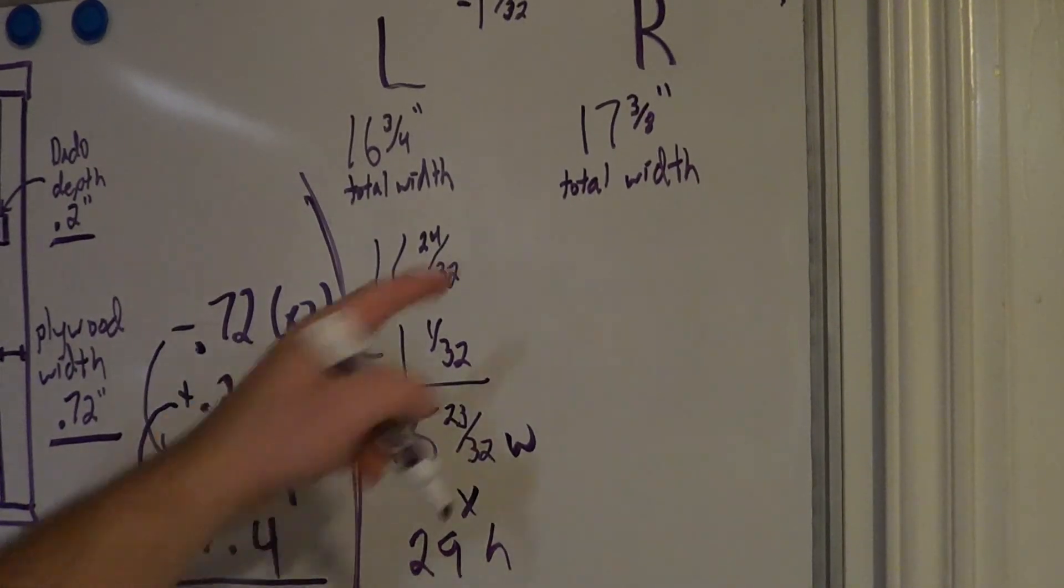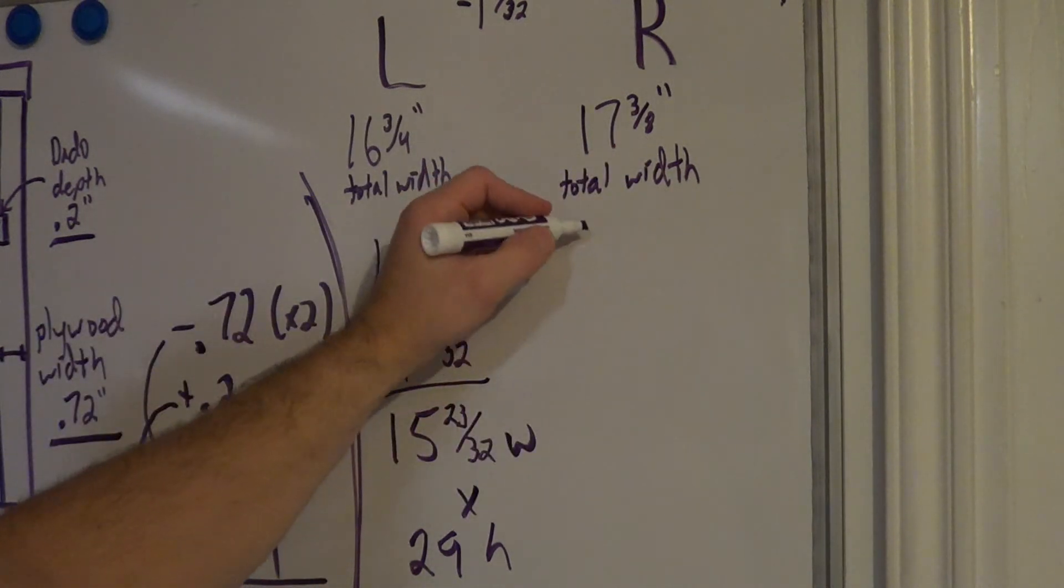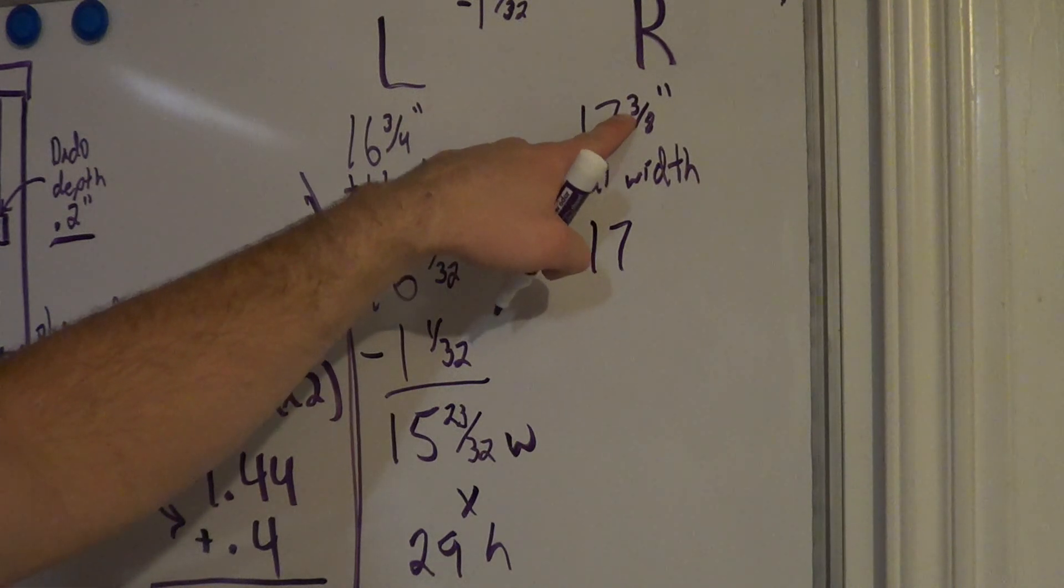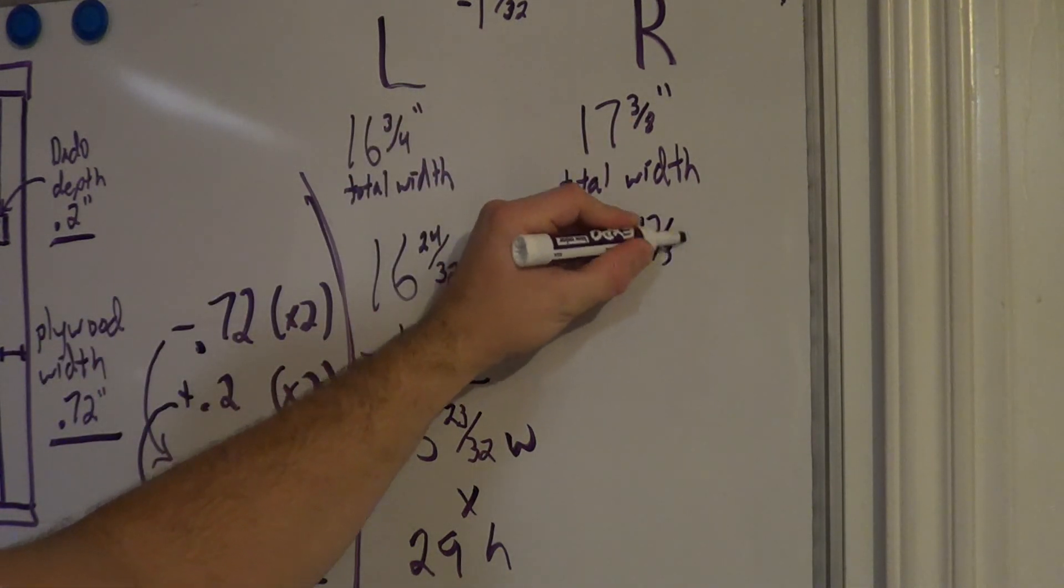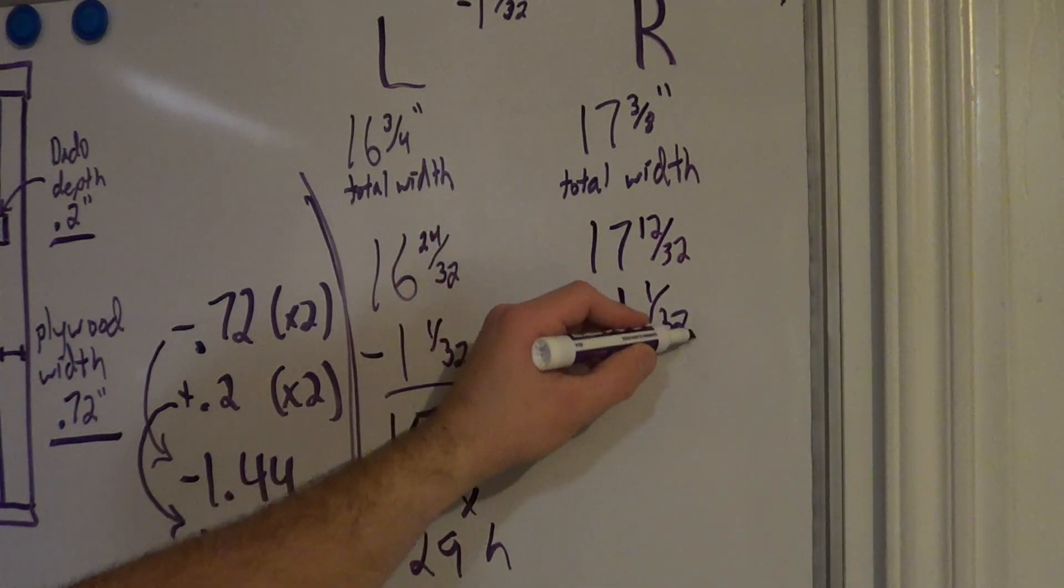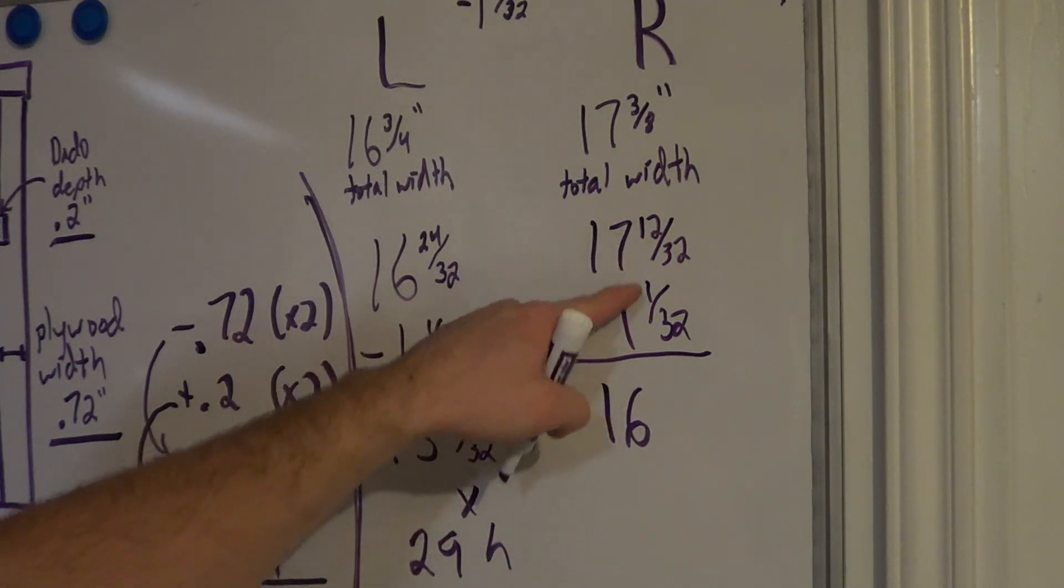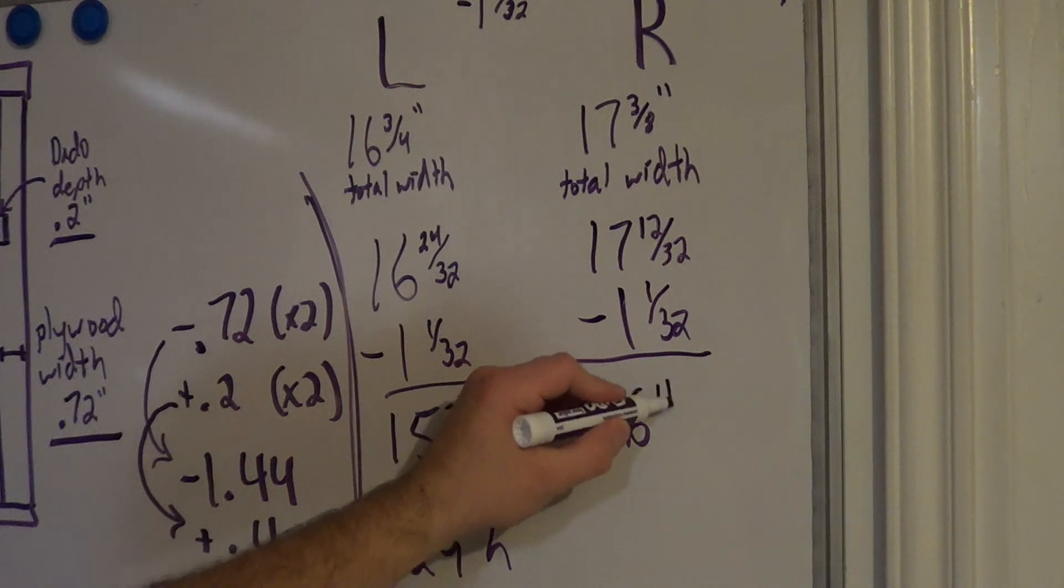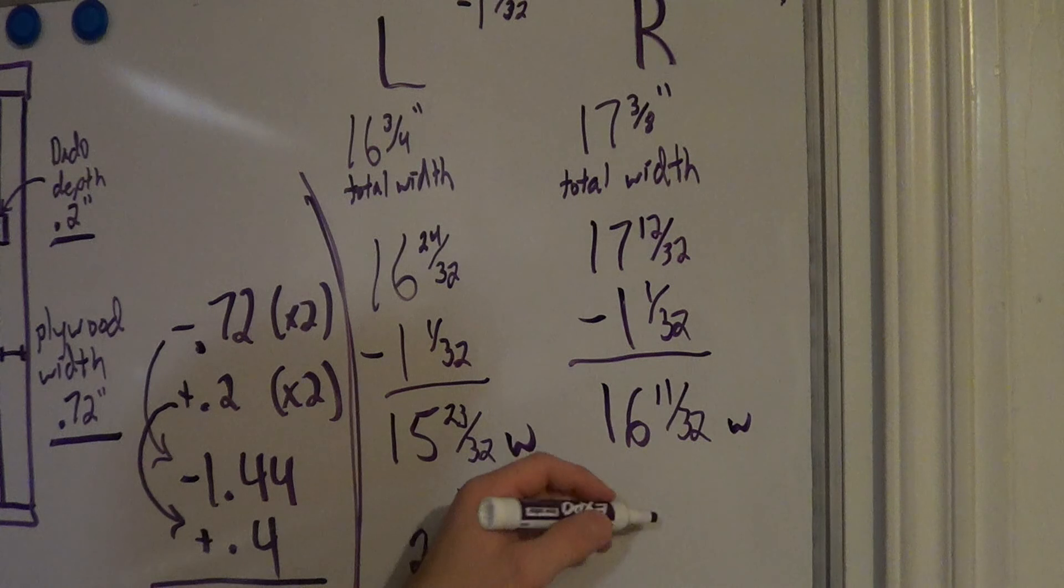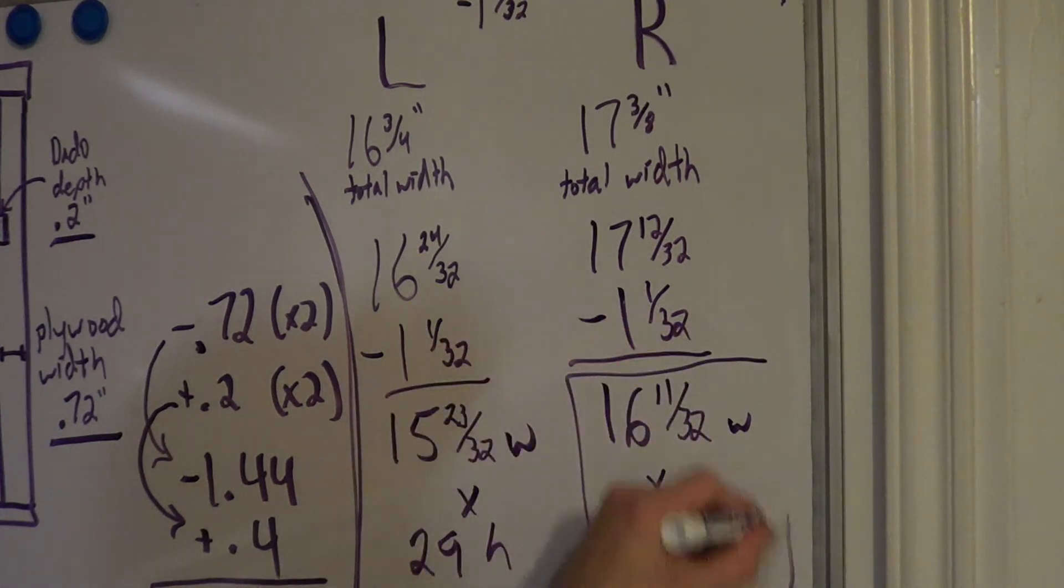Now, let's go over to the right column. So, I've got to get this guy, this denominator of 8 to be 32. I've got to multiply it by 4. So, that means my total width is 17. I'm going to multiply the top by 4 as well. 3 times 4 is 12. 30 seconds. Now, I'm going to go ahead and subtract that 1 and 1/32 from that right side. 17 minus 1 gives us 16. 12/32 minus 1/32 should be 11/32. Okay, so that is my width of that board, and then that one is also 29 inches high.